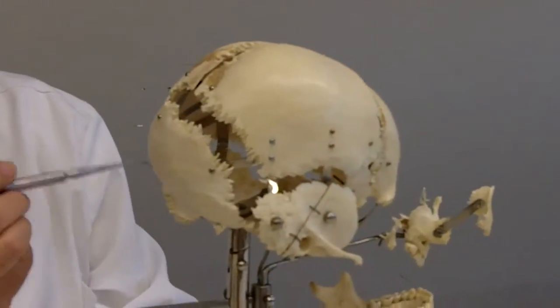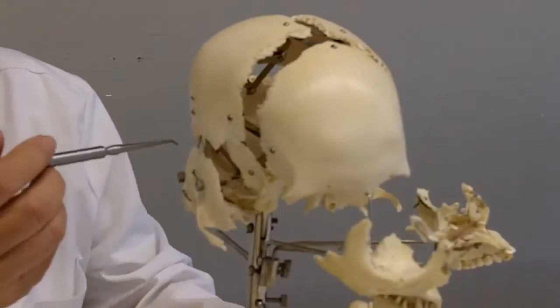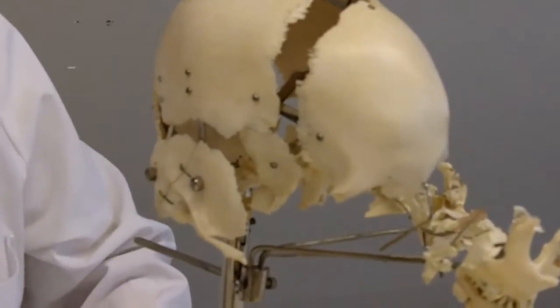Separating the occipital bone from the parietal bones is the lamboid or lamdoidal suture. And separating the temporal bone from the parietal bone is the squamous suture.